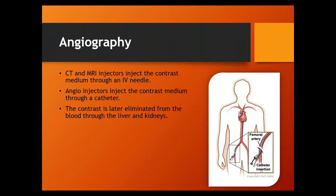Angiographic procedures don't use IV needles - ever. They use catheters, inserted typically into the femoral artery or femoral vein. The catheter is two or three feet long and very thin, and it snakes up into a particular body part - the heart is a very common target. They'll snake the catheter tip into one of the four chambers of the heart, then during the actual X-ray shot they fill that chamber with contrast. Angiographic injectors typically have much higher flow rates - up to 40 or 50 milliliters per second - compared to CT and MRI injectors which max out around 10 milliliters per second through an IV needle.